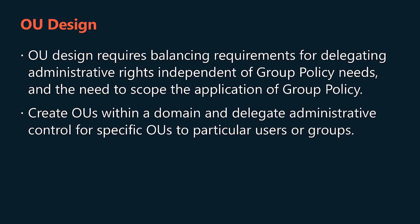Microsoft developed group policy architecture more than 25 years ago — some ideas have stood the test of time, while others only turn up as options in exam questions and recruitment interviews. OU design requires balancing requirements for delegating administrative rights independently of group policy needs. You can create OUs within a domain and delegate administrative control for specific OUs to particular users or groups. By using a structure where OUs contain homogeneous objects — either user or computer objects but not both — you can easily disable sections of a GPO that don't apply, reducing complexity and improving the speed of policy application. GPOs linked to higher layers of the OU structure are inherited by default for OUs at lower layers. How complicated your OU structure is depends on how many users and computers are in your organization — if you have 50 OUs and only 500 user accounts, someone had too much coffee.